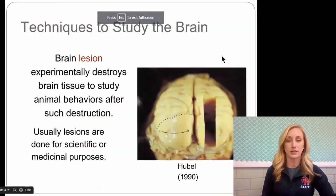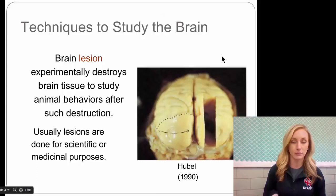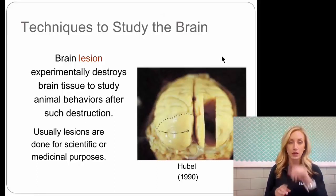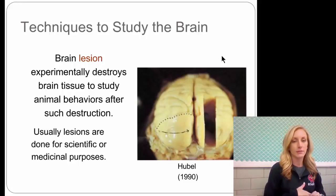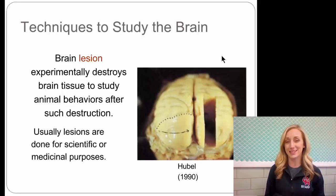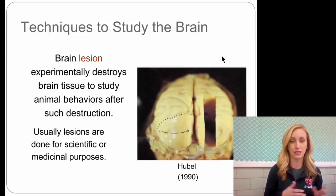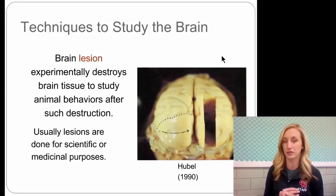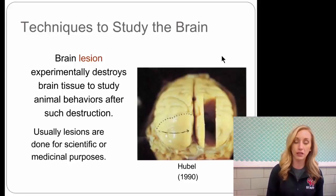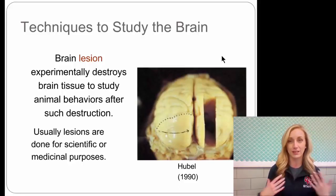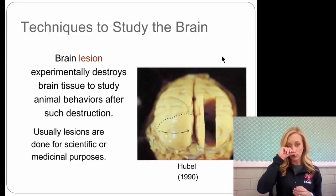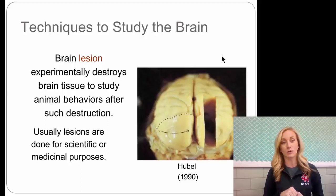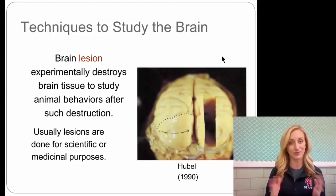First we have to talk about how we study the brain. A brain lesion was one of the first methods ever used — it experimentally destroys brain tissue to study animal behaviors after the destruction. If you're destroying a part of the brain, you can then see what that part of the brain controls. Usually lesions are done for scientific or medicinal purposes, not just for the heck of it.